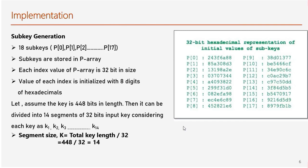So implementation of Blowfish encryption algorithm. There are 18 sub-keys which are generated through P-array, and sub-keys are stored in P-array after execution. Each index value of sub-key is 32 bits in size, as each value represents an 8-digit hexadecimal. So for the help of calculation, let's assume the key is 448 bits in length. Then it can be divided into 14 segments.